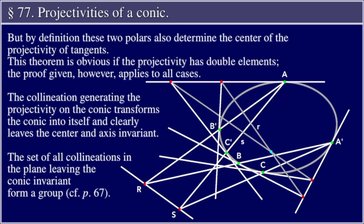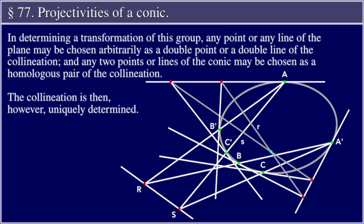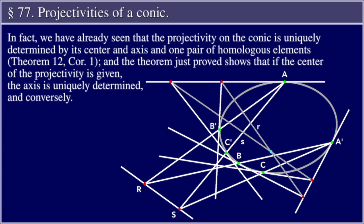The set of all collineations in the plane leaving the conic invariant form a group. In determining a transformation of this group, any point on any line of the plane may be chosen arbitrarily as a double point or double line of the collineation, and any two points or lines of the conic may be chosen as a homologous pair. The collineation is then uniquely determined. We have already seen that the projectivity on the conic is uniquely determined by its center, axis, and one pair of homologous elements (Theorem 12, Corollary 1), and the theorem just proved shows that if the center is given, the axis is uniquely determined and conversely.